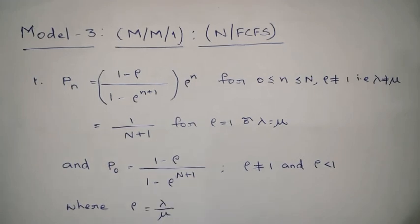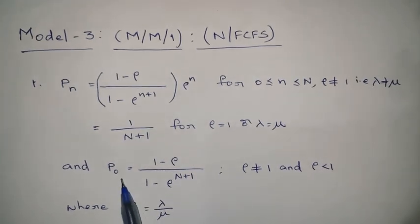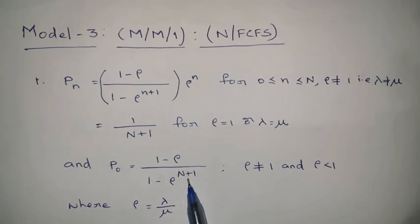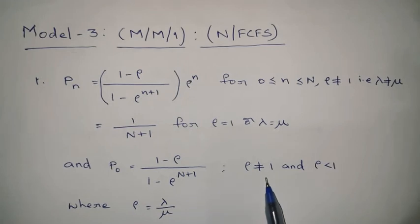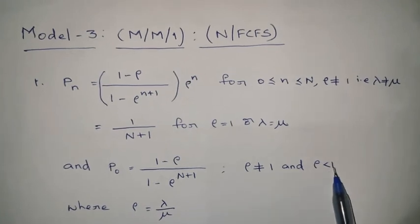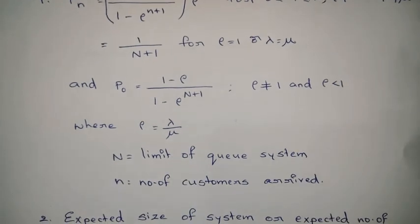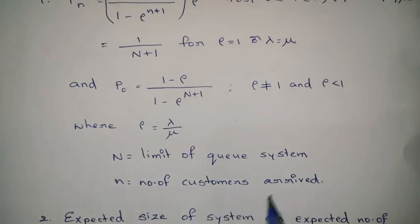P(0), the probability of having 0 customers in the system, equals (1 − ρ) / (1 − ρ^(N+1)). This formula is valid for ρ not equal to 1, or ρ less than 1, where ρ = λ/μ. Capital N is the limit of the queue system, and small n is the number of customers who have arrived to get service.